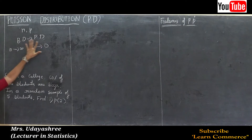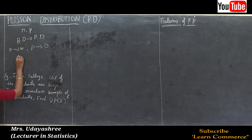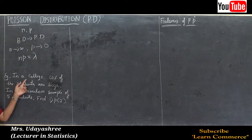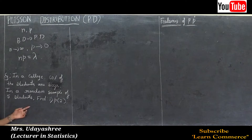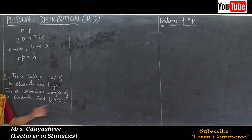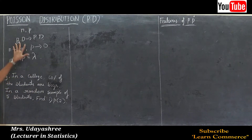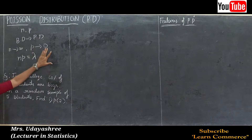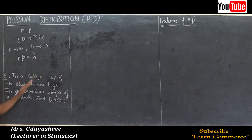Poisson distribution is the limiting form of binomial distribution. This means the mean of binomial distribution is equal to the mean of Poisson distribution. The mean of binomial distribution is np and the mean of Poisson distribution is lambda. Binomial distribution tends to Poisson distribution when n is large and p is very small.